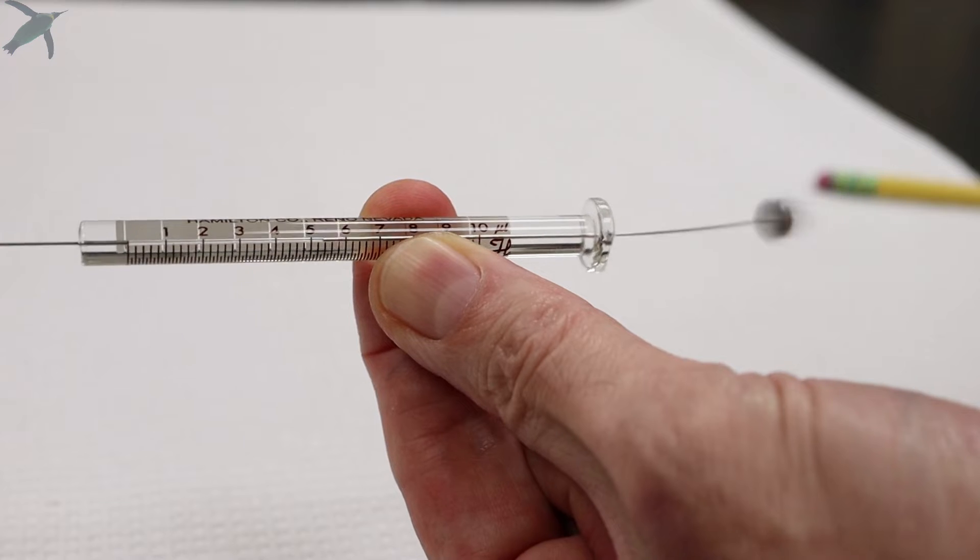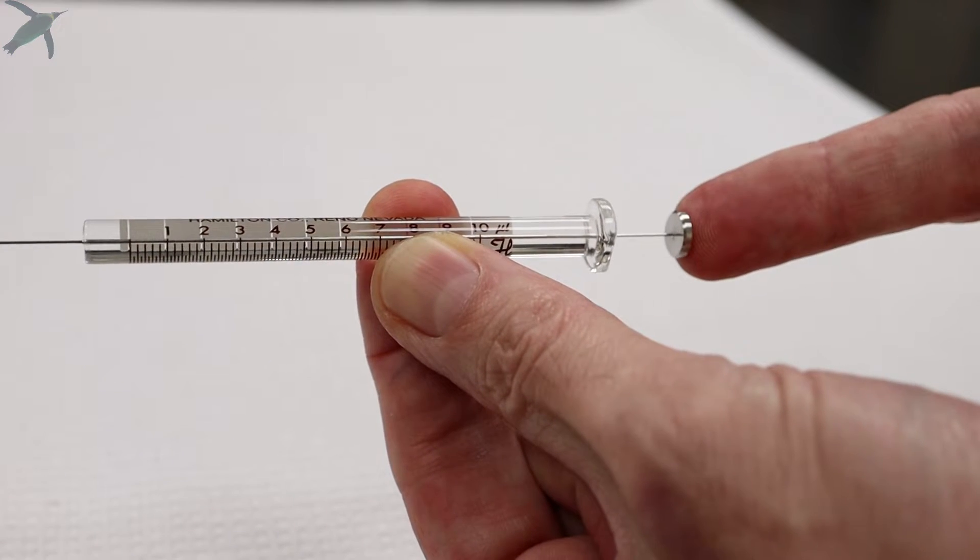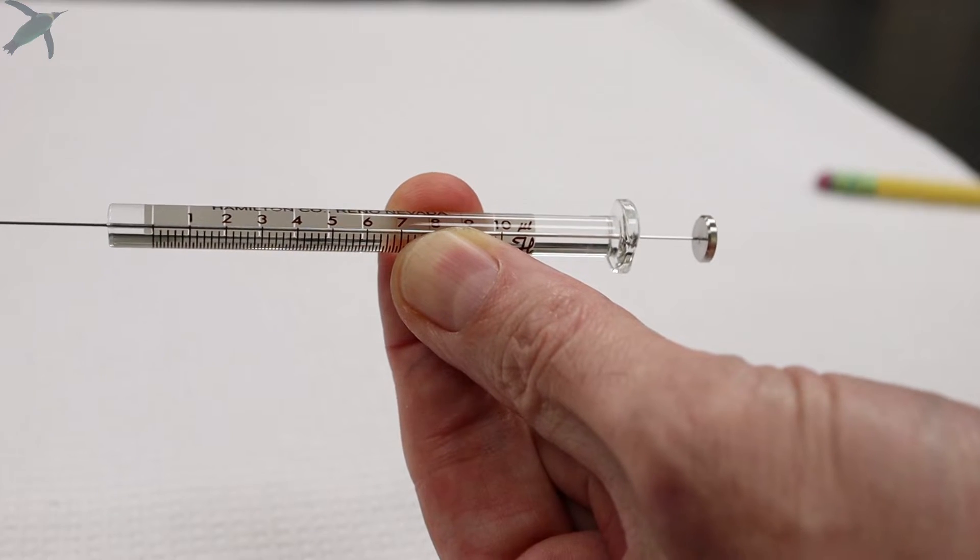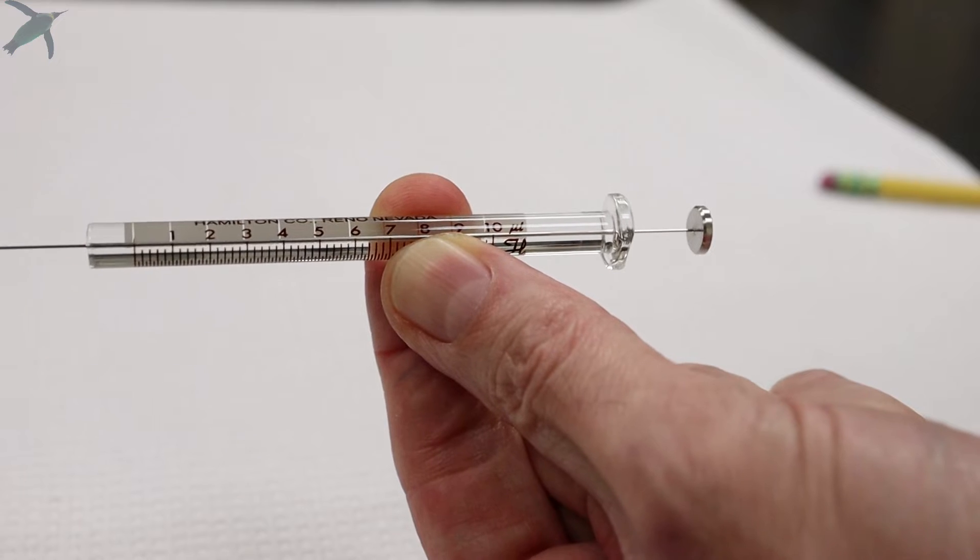Notice how thin and delicate the plunger is, so be careful not to apply too much force. Otherwise you will bend the plunger, and once it's bent it will never be straight ever again and you throw out the whole syringe.